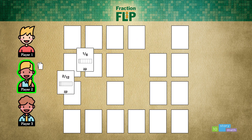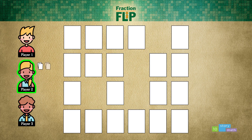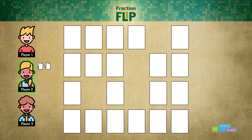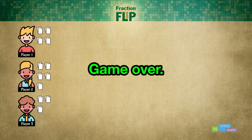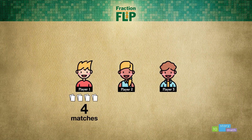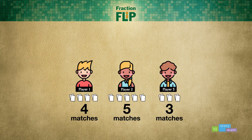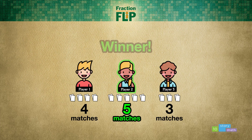The game continues this way, with the players taking turns. If they get a match, they go again. If they don't get a match, it's the next player's turn. The game ends when there are no cards remaining. This game has just finished. Each player has a pile with their matching cards. Player one has four matches, player two has five matches, and player three has three matches. Player two is the winner.